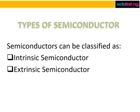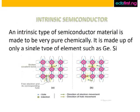Semiconductors can be classified as intrinsic semiconductors and extrinsic semiconductors. An intrinsic type of semiconductor material is made to be very pure chemically. It is made up of only a single type of element, such as germanium or silicon, as indicated in the diagram.